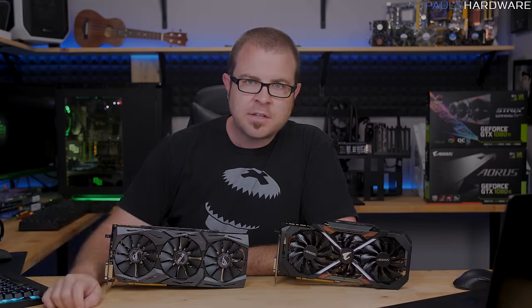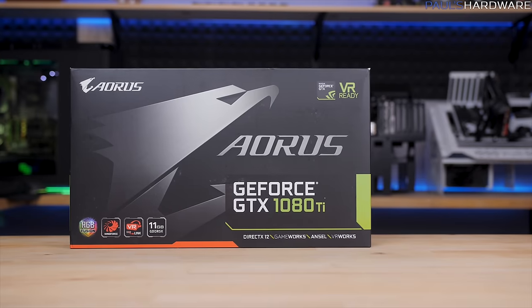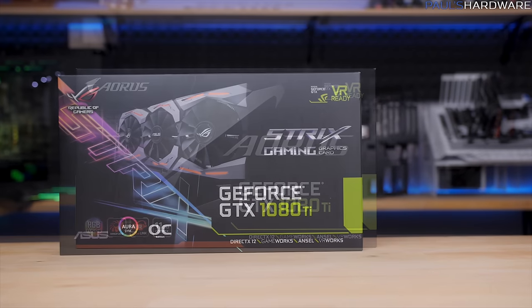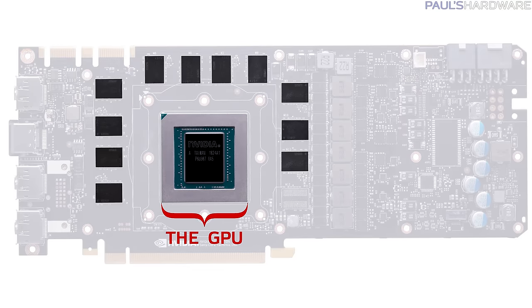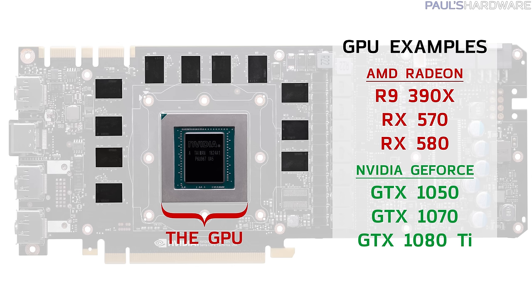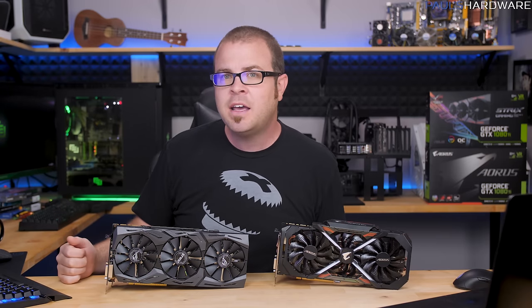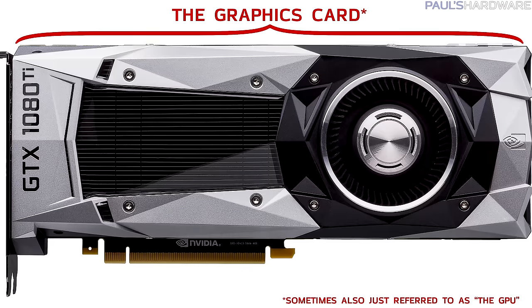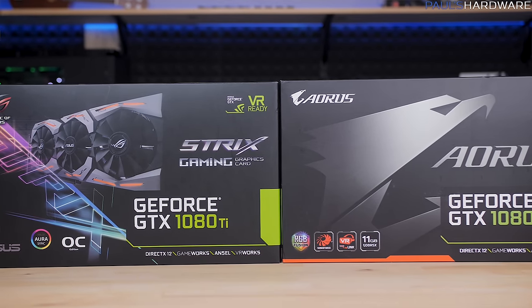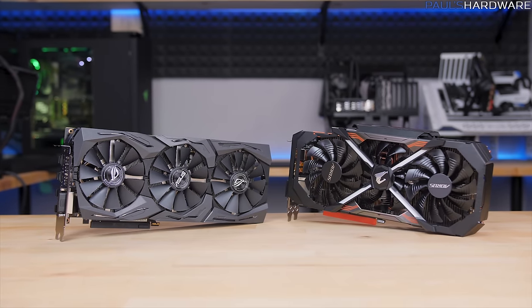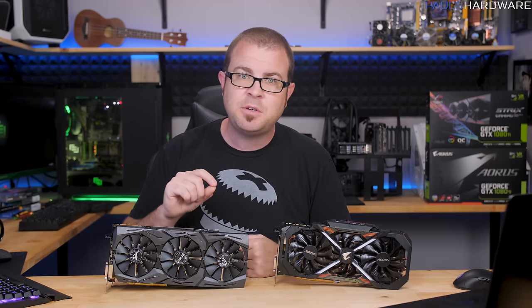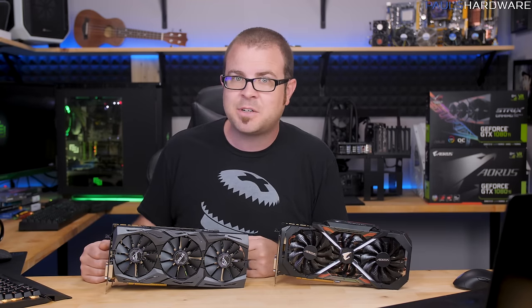So there are two steps to choosing a GPU. You gotta choose the GPU, and then you gotta choose the GPU. What I mean to say is first you must choose which GPU you want — like the actual graphics processing unit, like an RX 580 from Radeon or the Nvidia GTX 1080 Ti, like what I'm using in the cards I have here today — and then you must choose which actual graphics card based on that GPU you want to get, since there are usually quite a few versions from add-in card manufacturers like Asus or Gigabyte, among others. Today's video is going to be about that second choice: how to choose a specific graphics card based on the GPU that you've already selected, since I'm actually asked that question quite a bit.